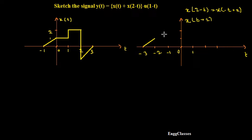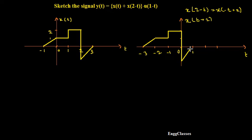Let me draw the time-shifted signal. The signal goes till this point and then something like this. This is the new time-shifted signal. The amplitude at the top is 1, this is 2, and at the bottom this is minus 1, and here also it remains minus 1. So this is X of t plus 2.